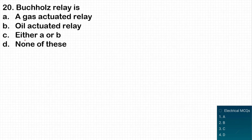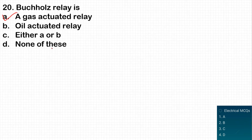The next question: the Buchholz relay is a gas-actuated relay, an oil-actuated relay, either, or none? The Buchholz relay is a gas-actuated relay. It operates when, due to some fault in an oil-immersed transformer, gas is produced, and the relay actuates based on that gas production.